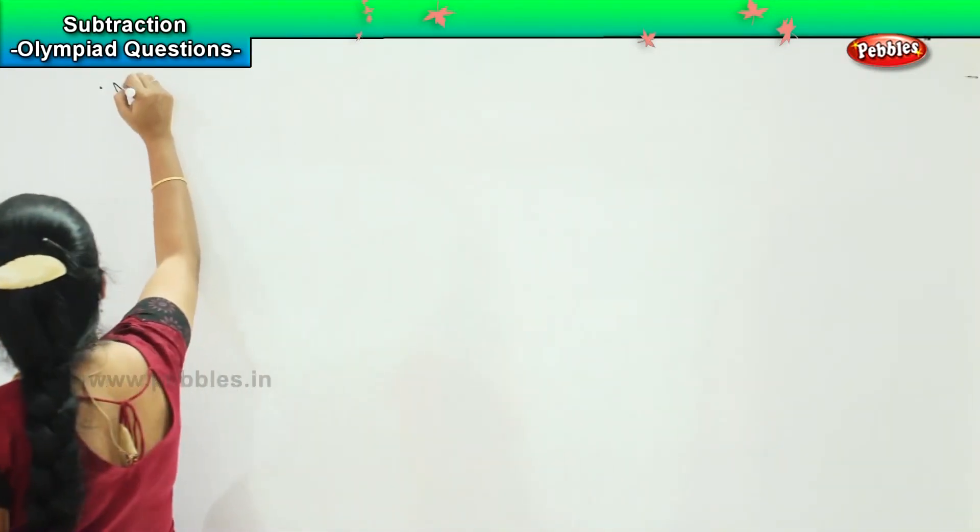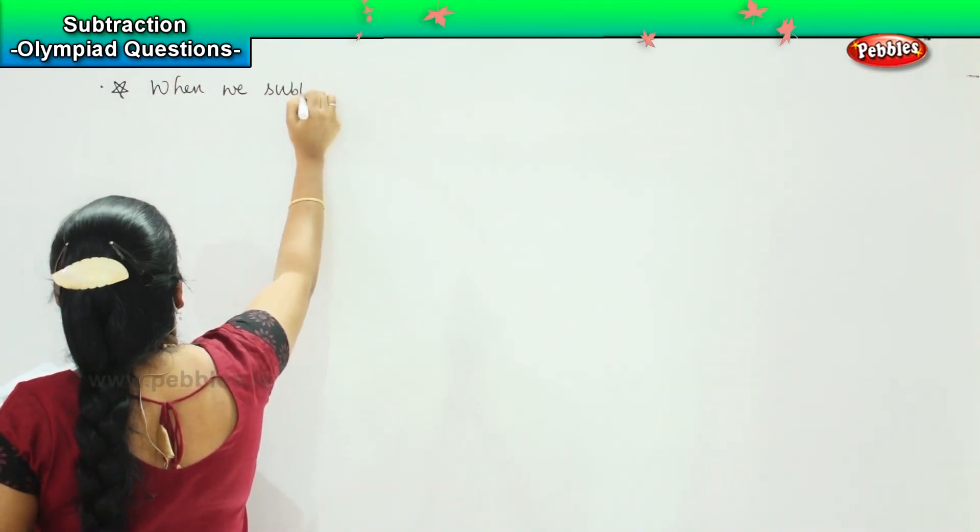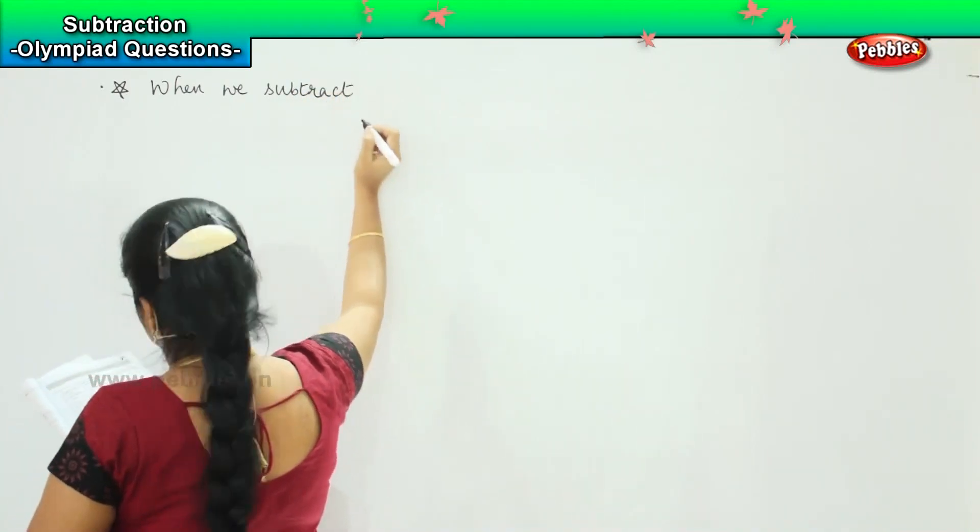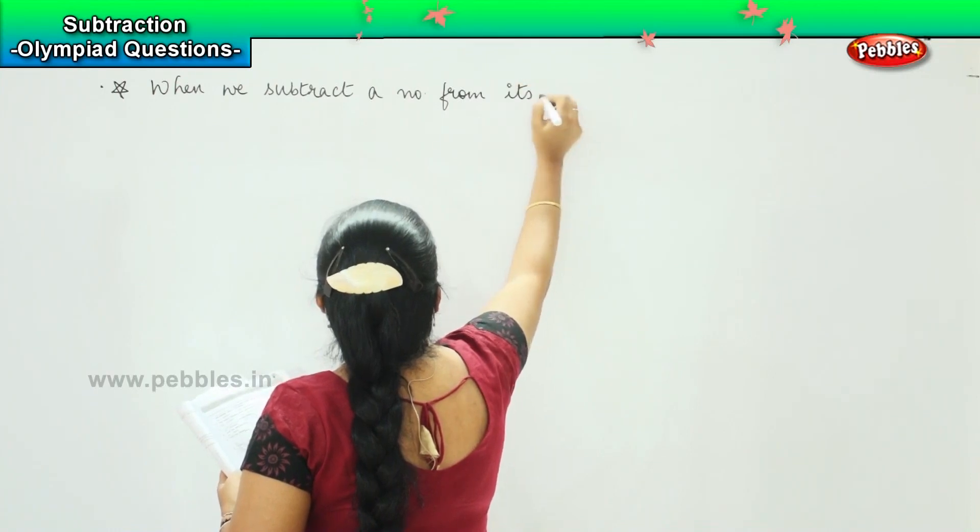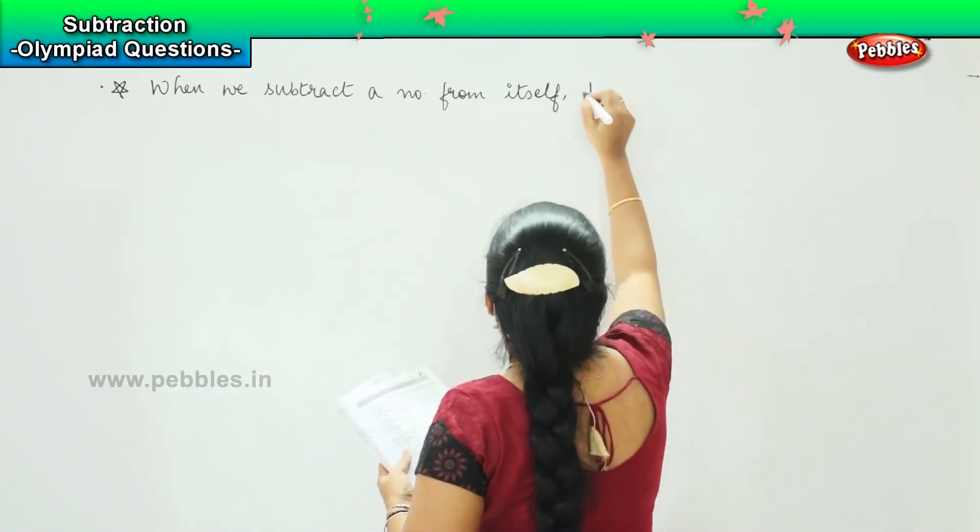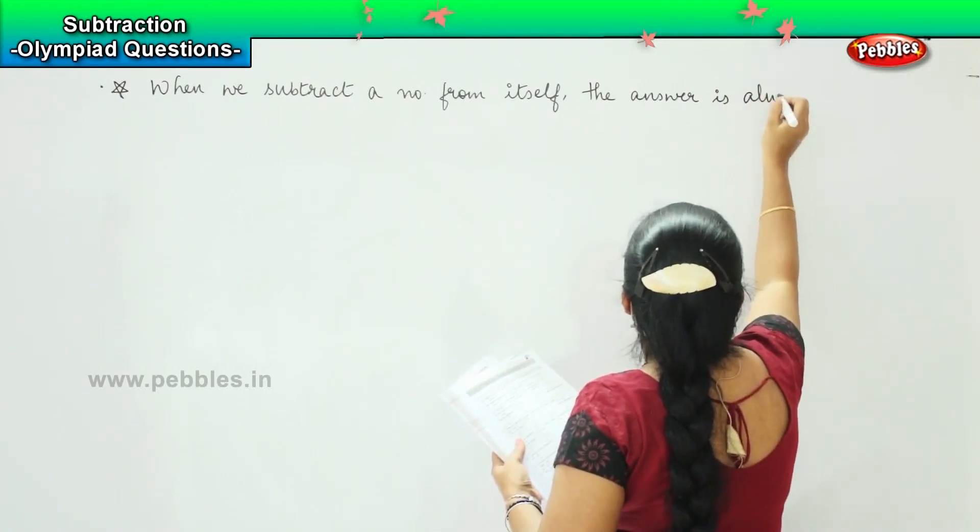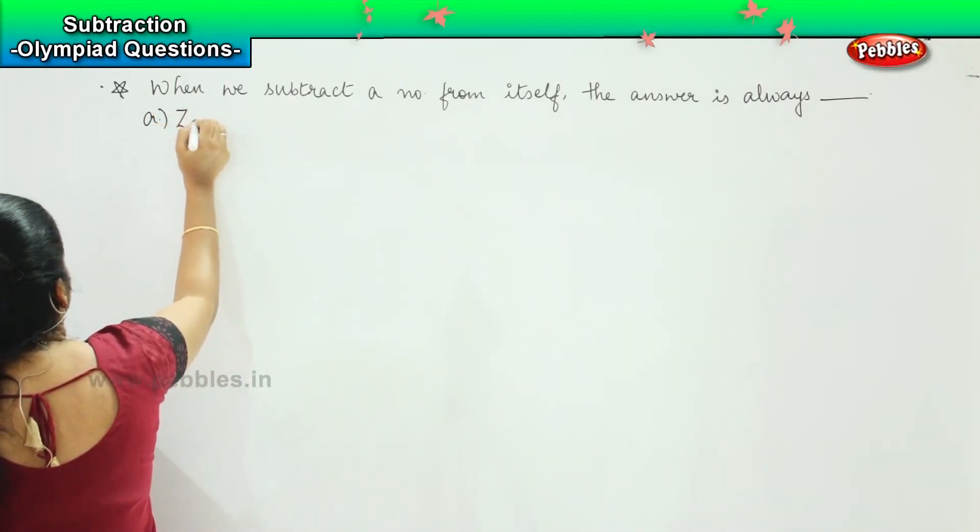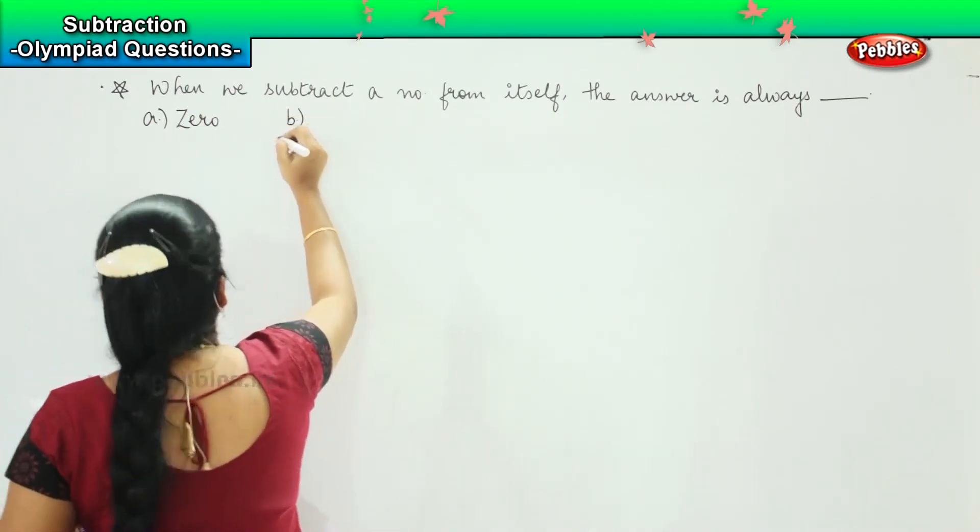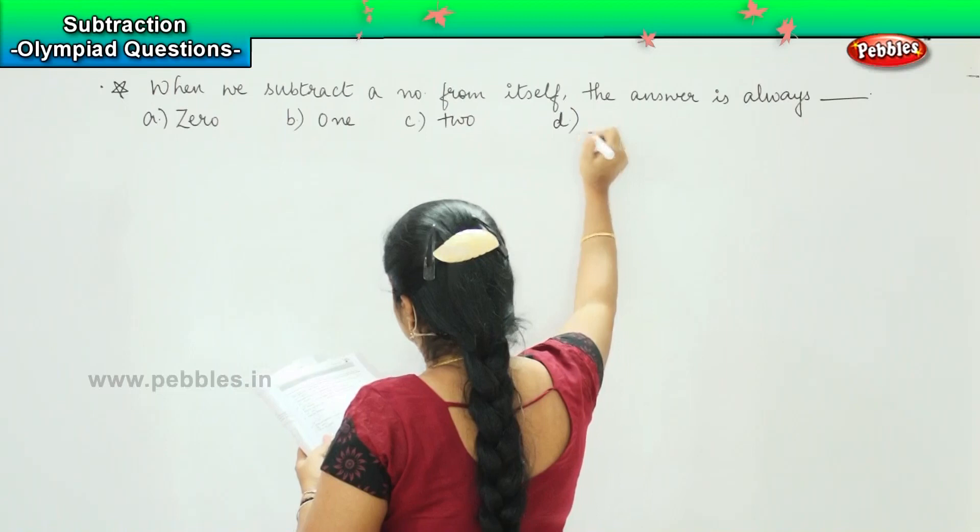Ready to solve the next sum? Ok, so here is your question. When we subtract a number from itself, the answer is always dash. The options are: a) zero, b) one, c) two, and d) itself.